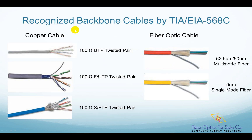The TIA/EIA 568C recognizes several types of cables as backbone cables. On the copper cable side, it recognizes 100 ohm twisted pair copper cable, which includes 100 ohm unshielded twisted pair UTP cable, 100 ohm screened foiled UTP cable, and 100 ohm screened shielded twisted pair SFTP. On the fiber optic cable side, it recognizes 62.5 micron or 50 micron core multimode fiber and 9 micron single-mode fiber.